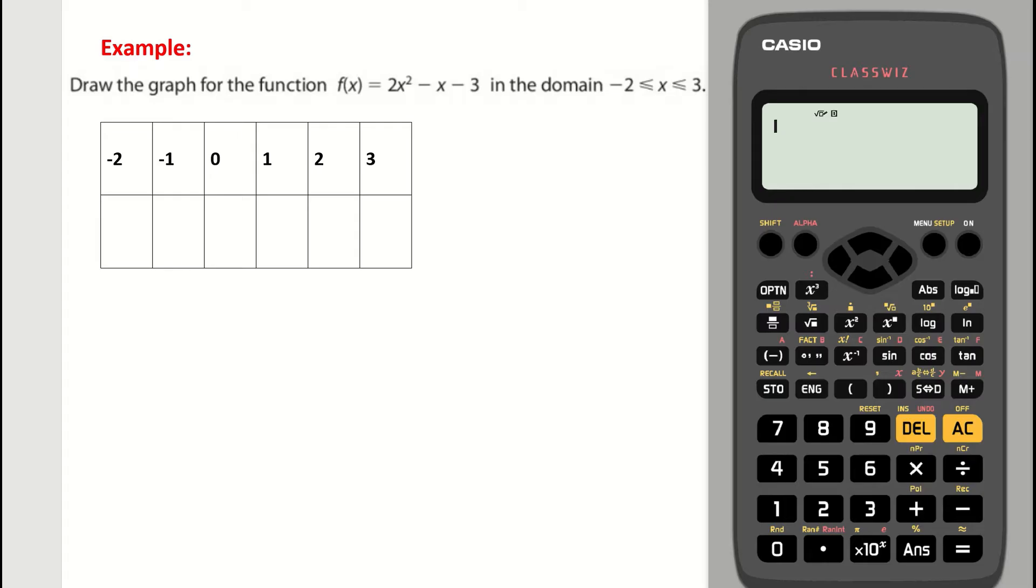So what we have to do is, first of all on our calculator, we have to type in this function 2x² - x - 3. So in order to do that, we press the menu key and then we press 3 for table.